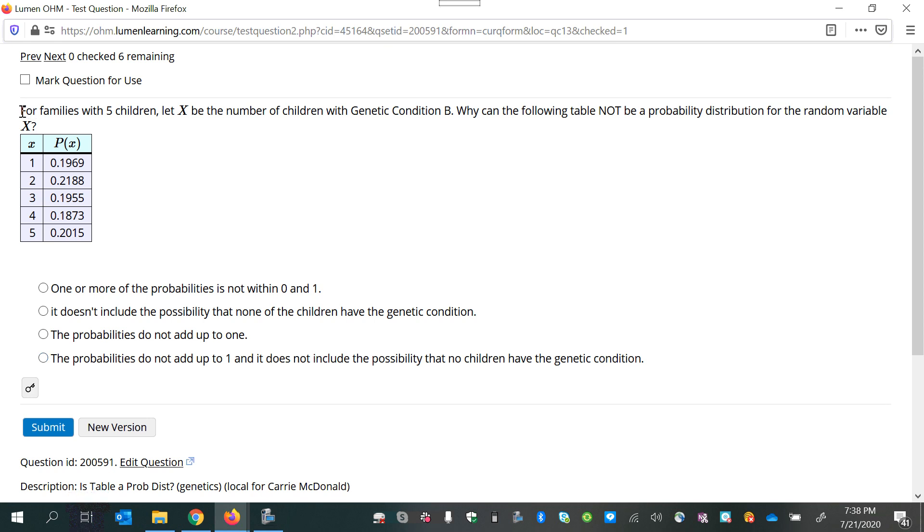In this video, we'll look at this question where we're asked to determine if we have a probability distribution. For families with five children, let X be the number of children with genetic condition B. Why can the following table not be a probability distribution for the random variable X?